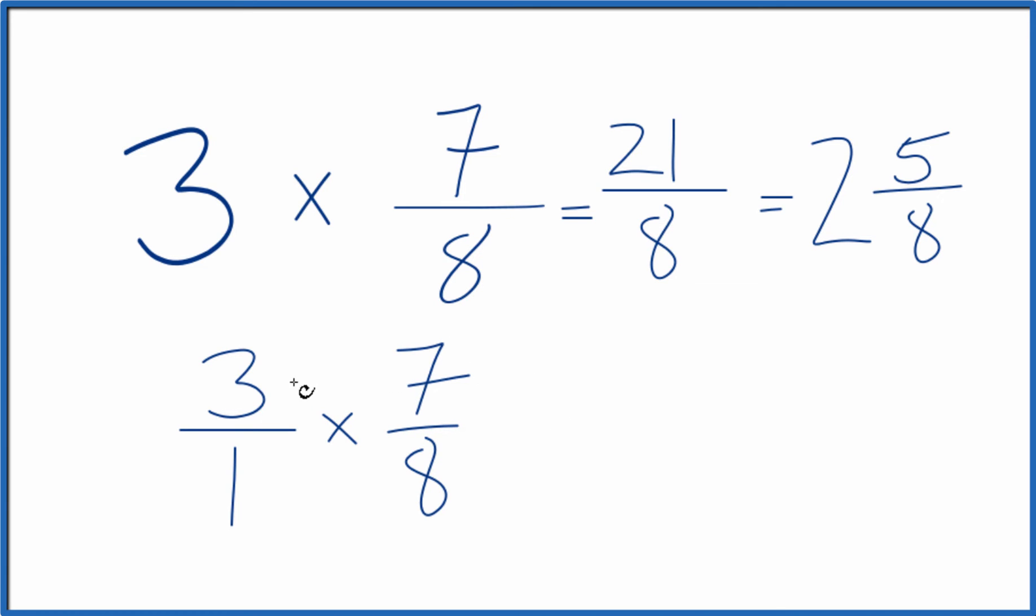When we multiply fractions, we multiply the numerators, then the denominators. 3 times 7 is 21. 1 times 8, that's 8. And like we said before, we could write a mixed number, 2 and 5 eighths.